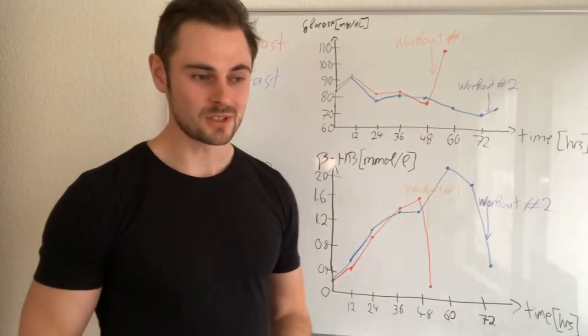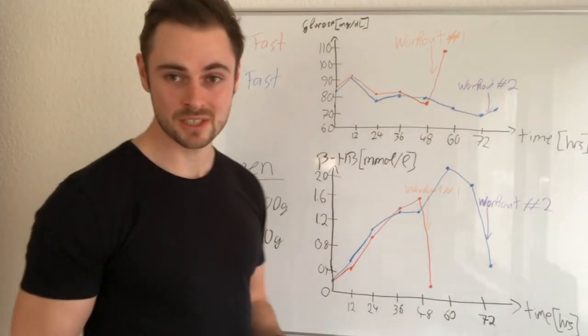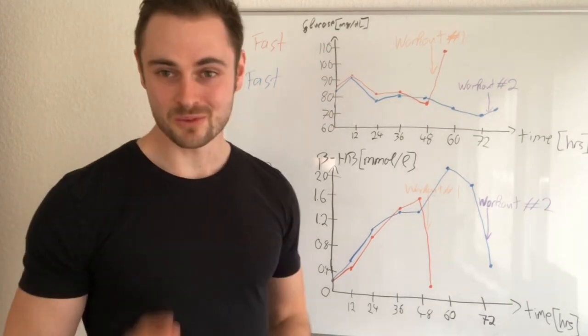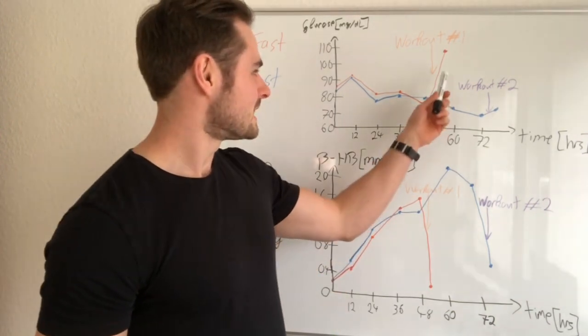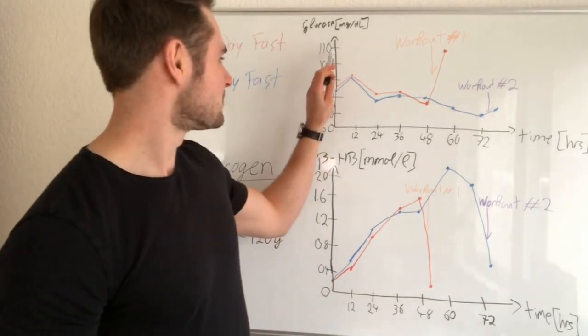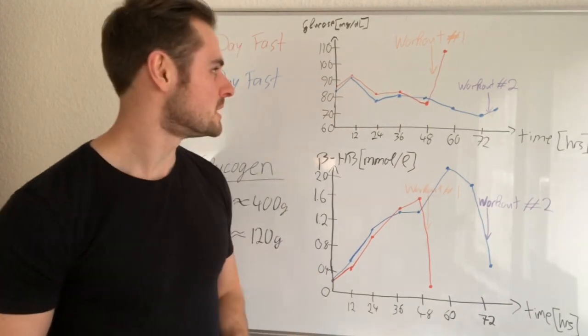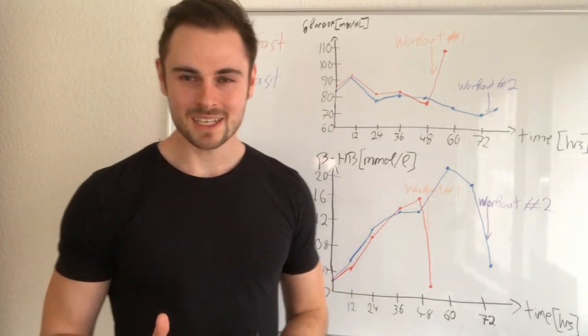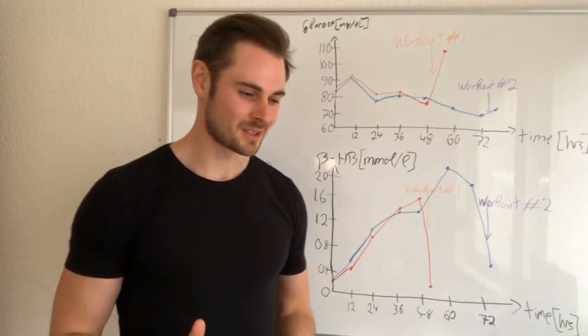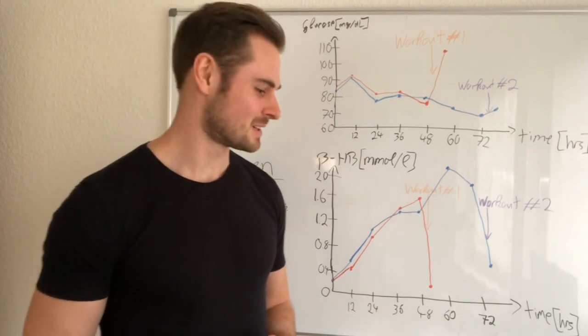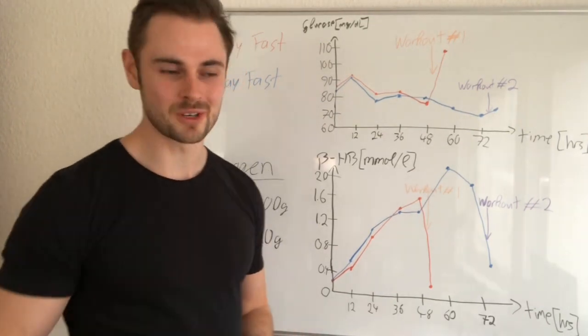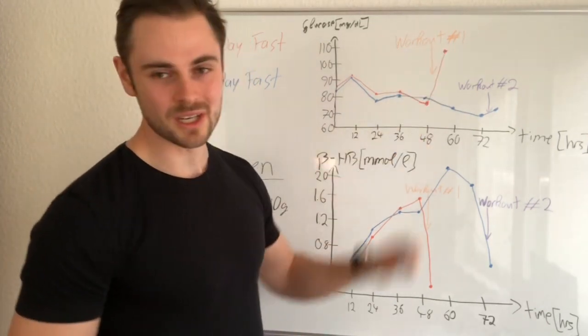Now for the two-day fast it became really interesting - I was very surprised to see this. I then went into the gym at 48 hours, did my full body workout, and measured immediately again. What I found was mind-boggling - my glucose literally skyrocketed. I've never measured such high glucose levels - it was around 105 milligrams per deciliter. Back then I was thinking, what could it be? My glycogen stores should be used up. I was thinking a lot about what it could be, and I'll talk about it more at the end of this video.